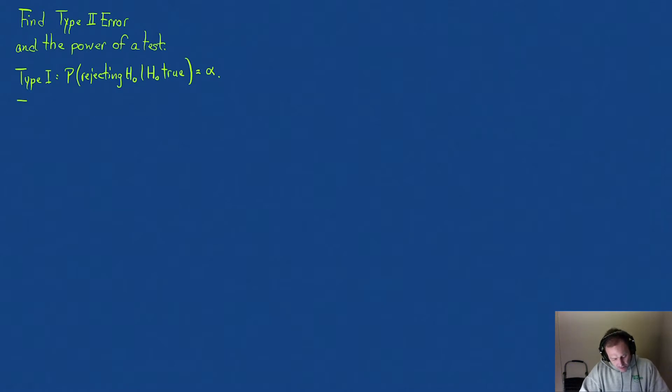Now, Type 2 is the probability of not rejecting the null hypothesis when in fact the null hypothesis is false. This is beta.